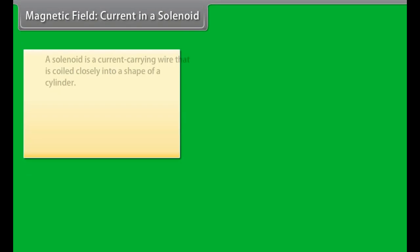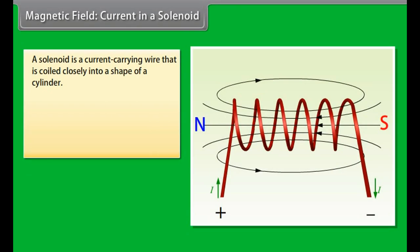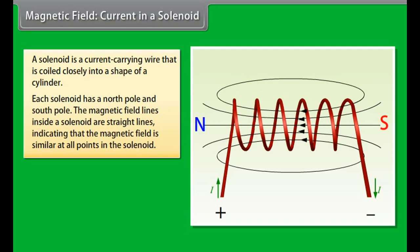Magnetic field current in a solenoid. A solenoid is a current carrying wire that is coiled closely into a shape of a cylinder with the turns as close together as possible. This is similar to a bar magnet. Each solenoid has a north pole and south pole. The magnetic field lines inside a solenoid are straight lines and indicate that the magnetic field is similar at all points in the solenoid.